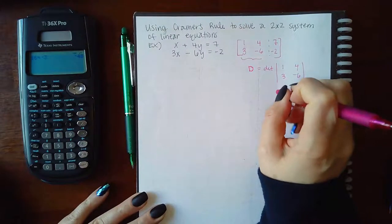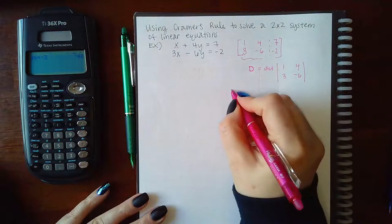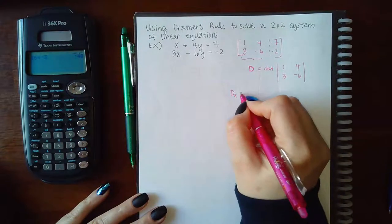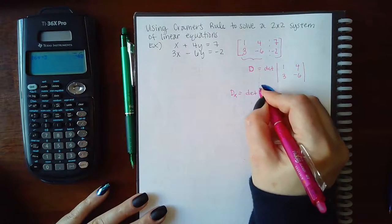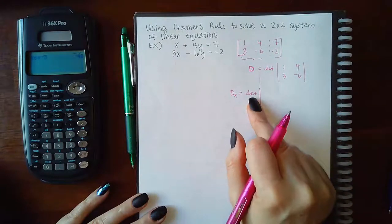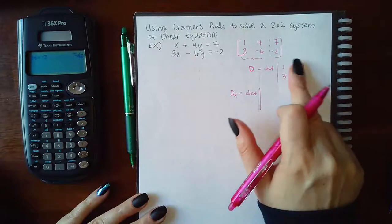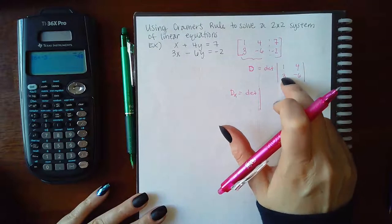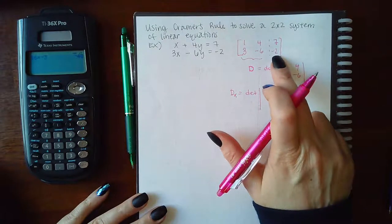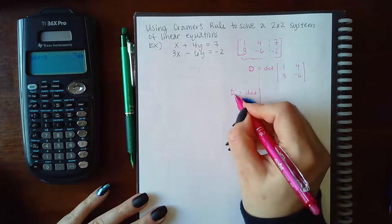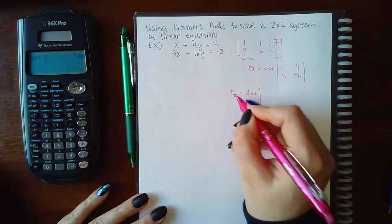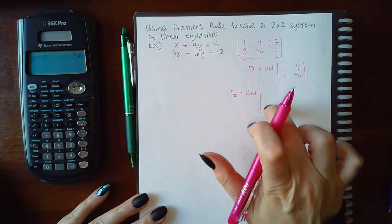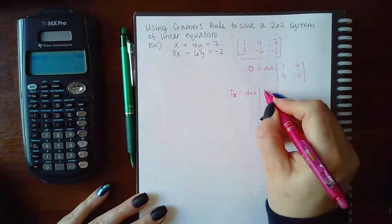Another matrix you need to find is what's denoted by DX. And what that is, is it's a determinant of this same matrix, but instead of the X column, you put the constant column. So when it tells you this notation here, that's the variable column that you're going to replace.